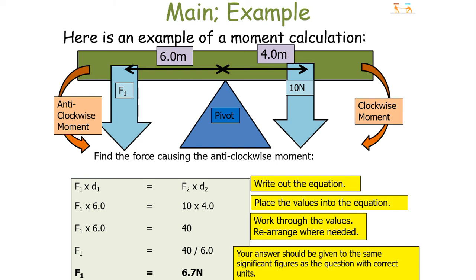Let's check if the answer looks right. The force causing the clockwise moment is closer to the pivot than the force on the left-hand side. So to get the same moment value, the smaller distance means the force must be bigger. Conversely, the larger distance on the left means its force should be smaller than 10 newtons — and 6.7 newtons is indeed less than 10, so the answer looks correct.